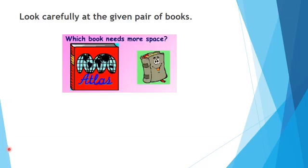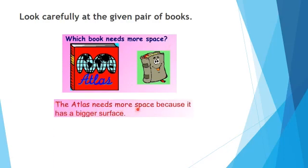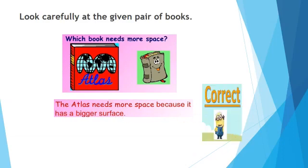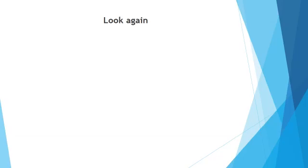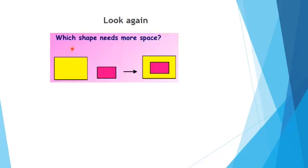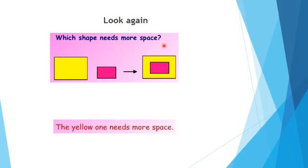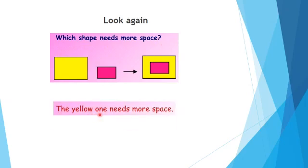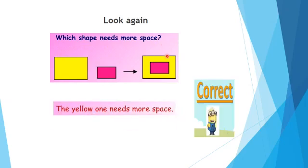Look carefully at the given pair of books and think for a moment: which book needs more space? Of course, the atlas needs more space because it has a bigger surface. Now, look again at which shape needs more space. The yellow one needs more space, as it covers more surface.